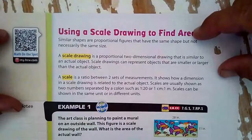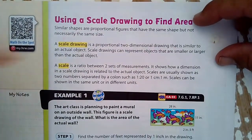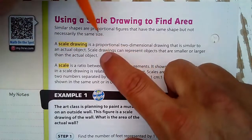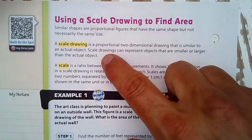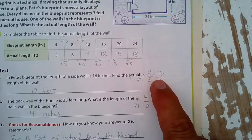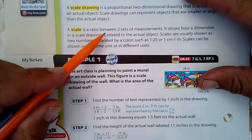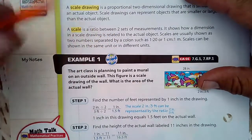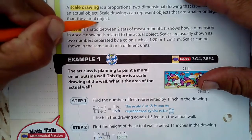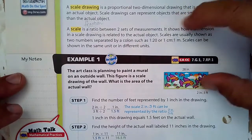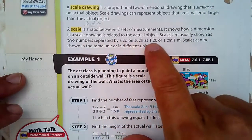Using a scale drawing to find the area. Similar shapes are proportional figures that have the same shape but not necessarily the same size. A proportion is two equal fractions, and that's what we were using here. A scale is a ratio — really just a fancy word for fraction — between two sets of measurements. It shows how a dimension in a scale drawing is related to the actual object.